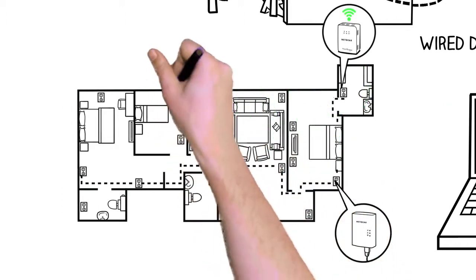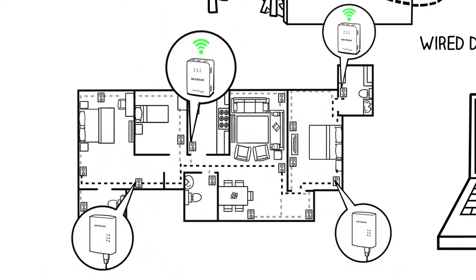And best of all, once you've connected one Powerline adapter to your home's router, you can add up to 15 more, so you can connect in any room you want.